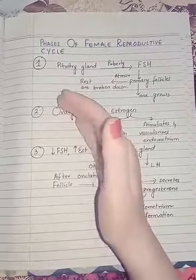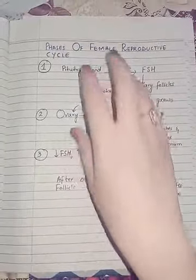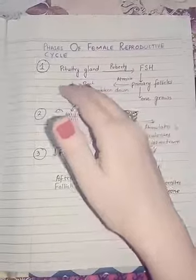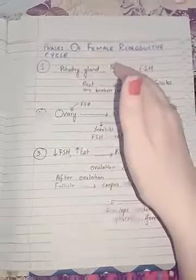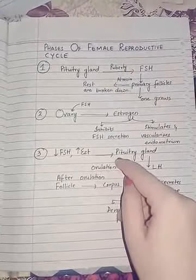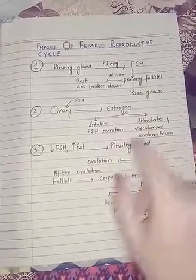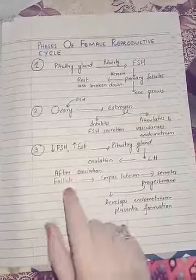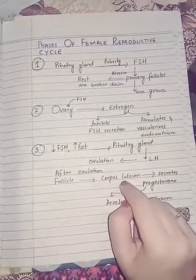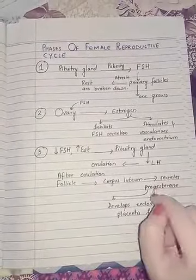Ovulation is the release of the ovum from the follicles into the oviduct and then into the uterus. This process is known as ovulation — the release of the ova, and ova means egg. After ovulation, the follicle becomes empty and is now known as the corpus luteum.